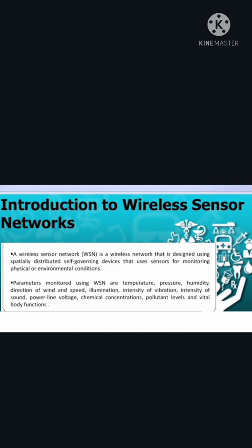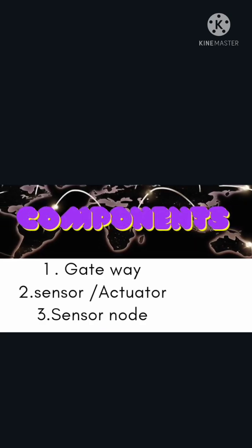A wireless sensor network is a wireless network that is designed using spatially distributed, self-governing devices that use sensors for monitoring physical and environmental conditions. Parameters monitored using WSN include: temperature, pressure, humidity, direction of wind and speed, illumination intensity, vibration intensity, sound intensity, power line voltage, chemical concentrations, pollutant levels, and vital body functions.